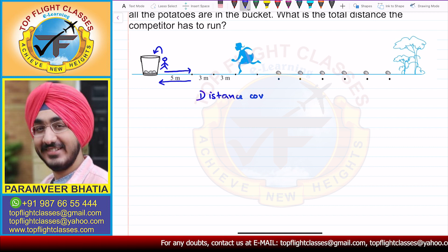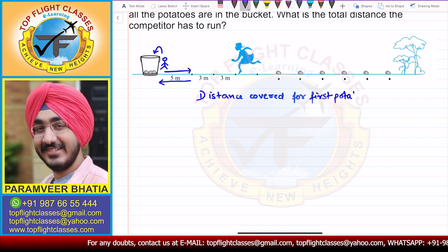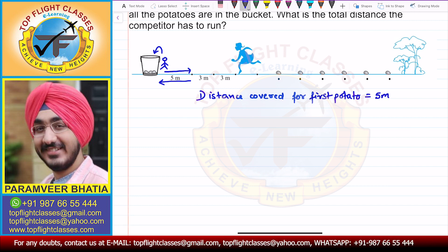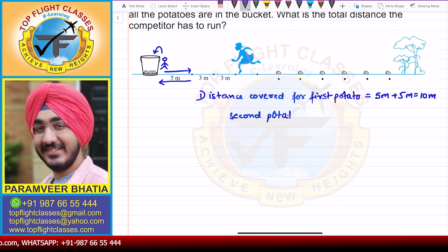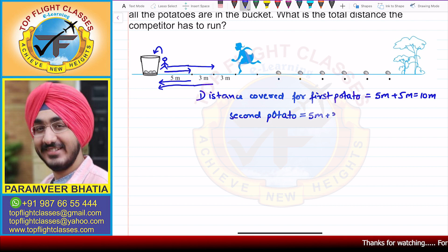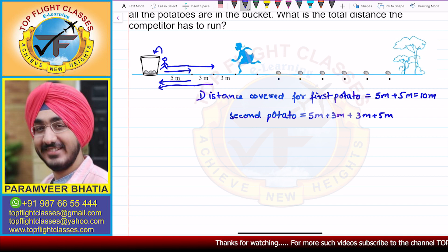The distance covered for the first potato is 5 meters to reach the potato, then 5 meters back to the bucket, that is equal to 10 meters. For the second potato, 5 meters to the first potato, then 3 meters more to the second potato, then 3 meters back, then 5 meters to the bucket — that gives us 5 plus 3 plus 3 plus 5 equals 16 meters.